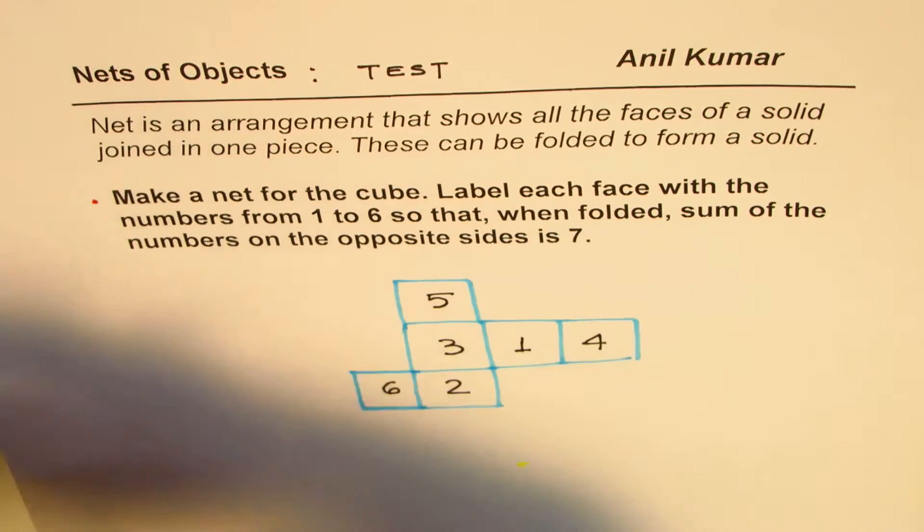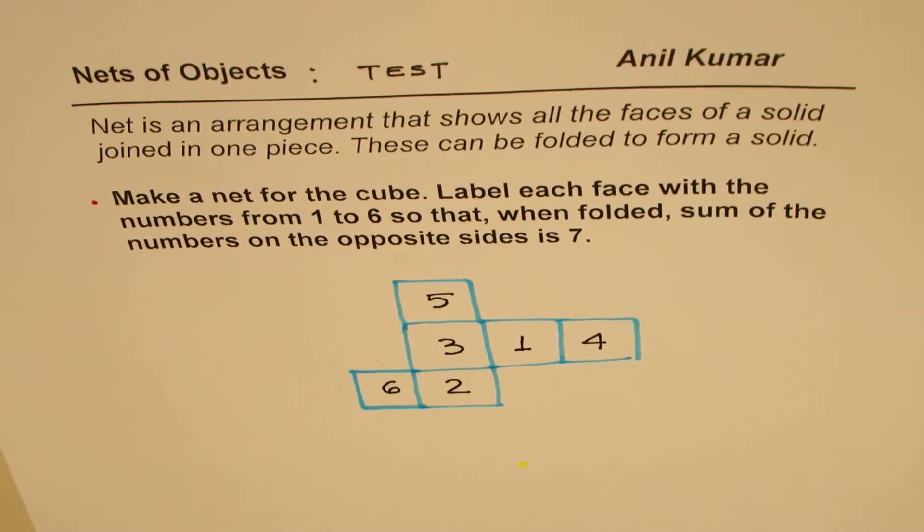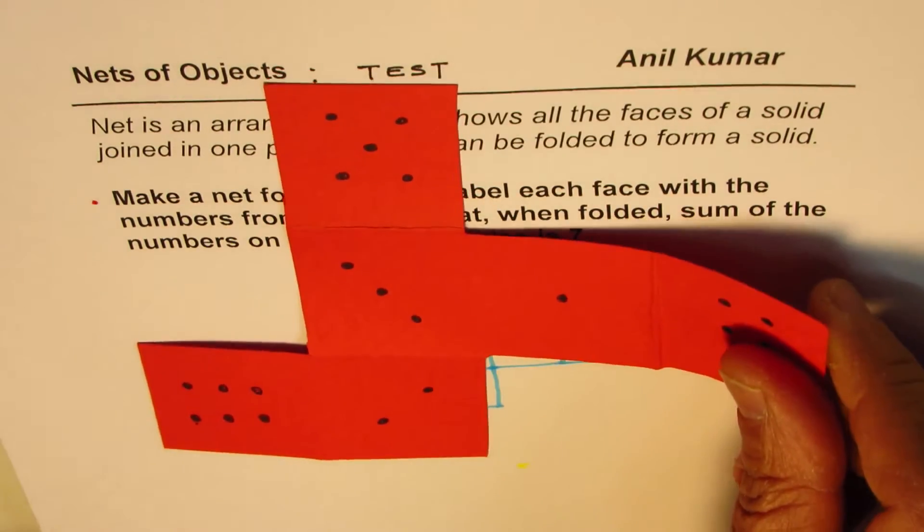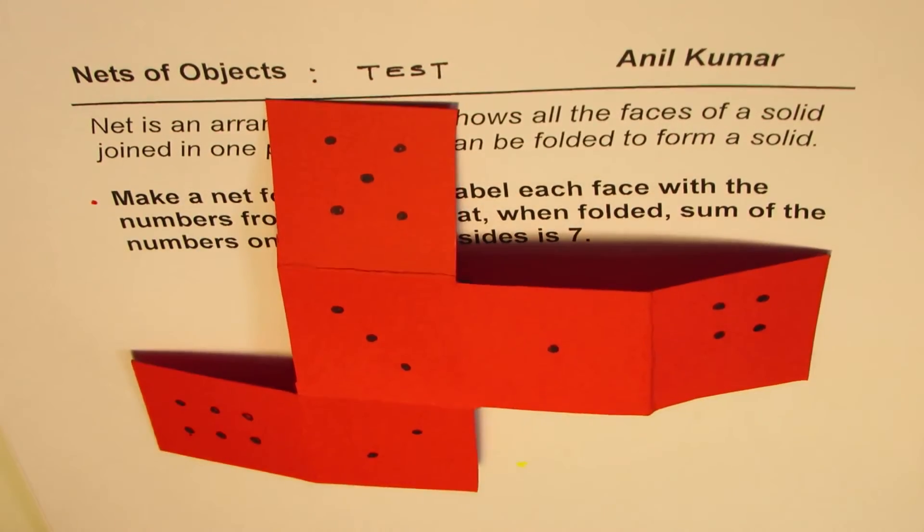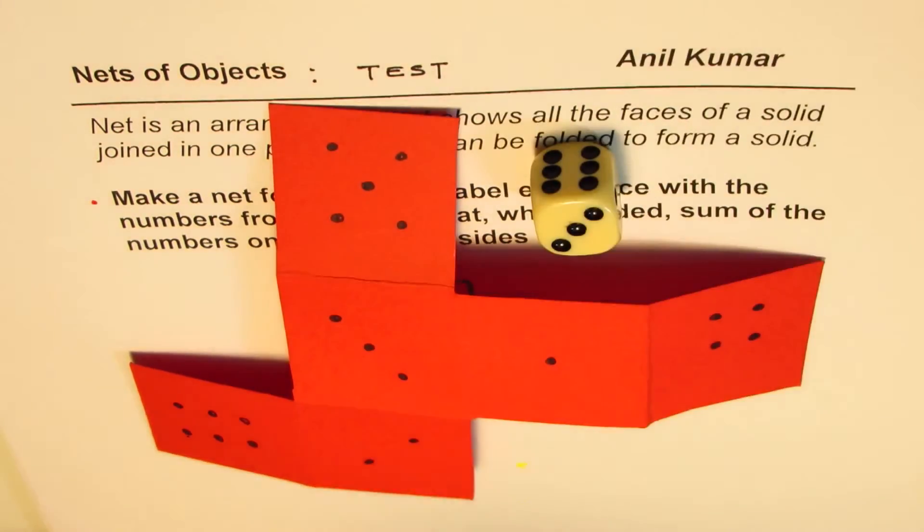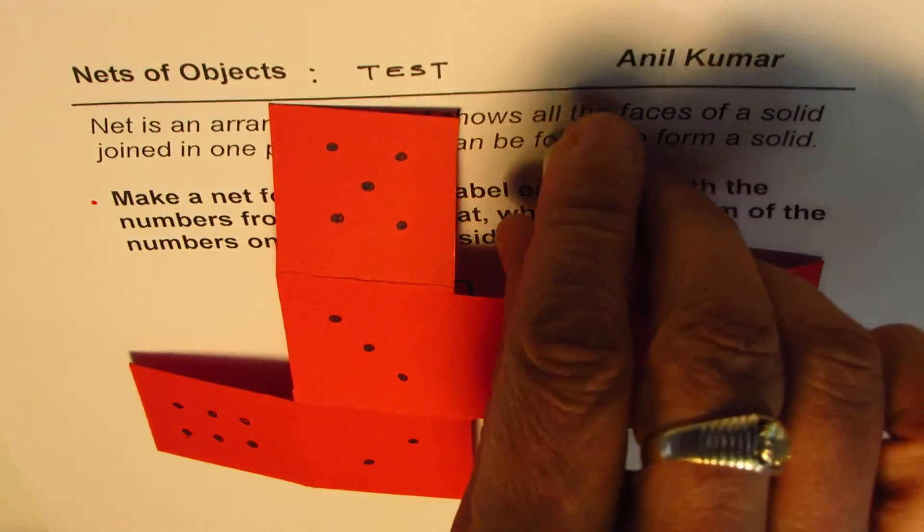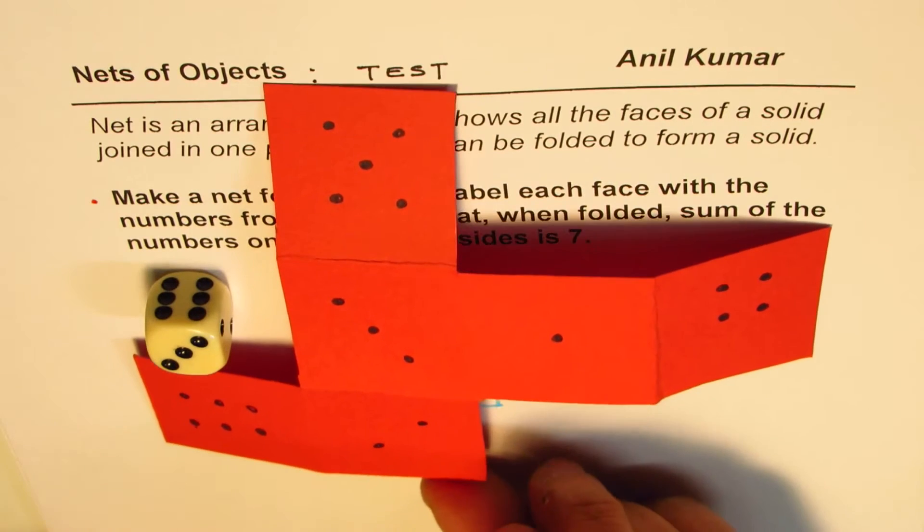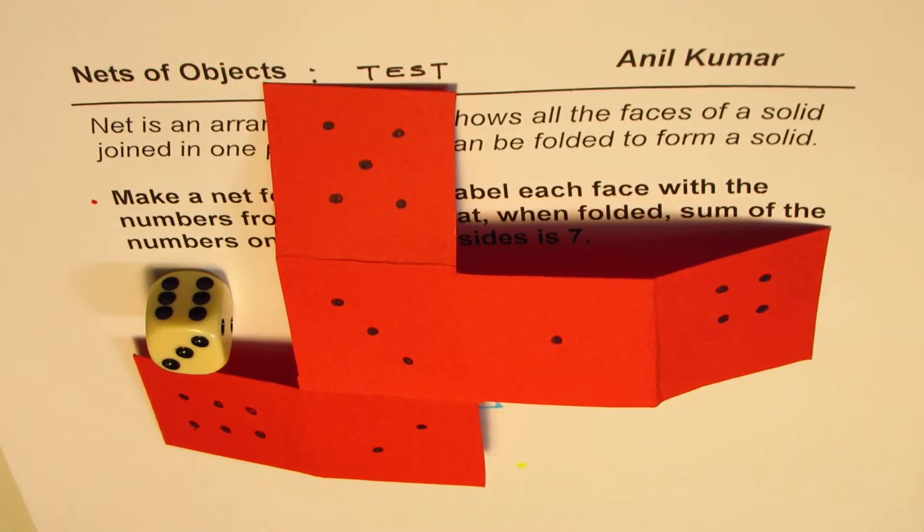That is how you could do it. Again for your reference, here is the net for a die. There is the die. Let me put 3 on the top and that is how it matches. Let me just put it here. I hope that works for you.